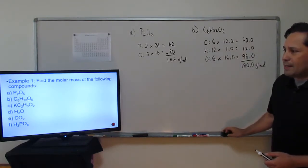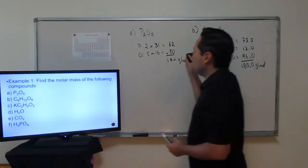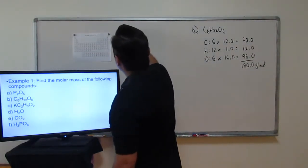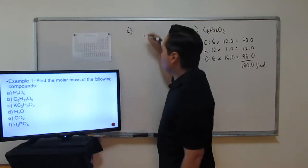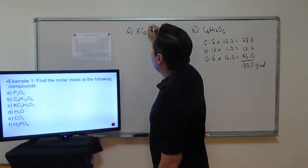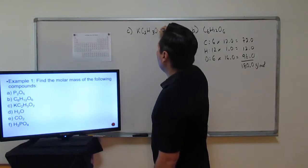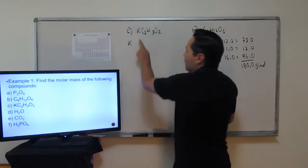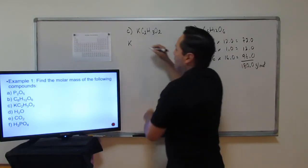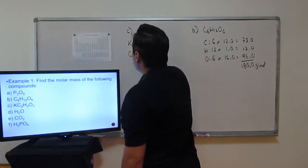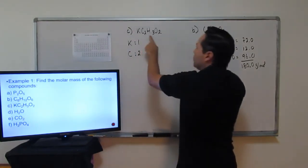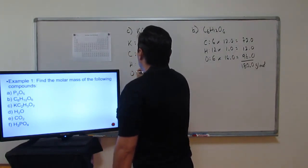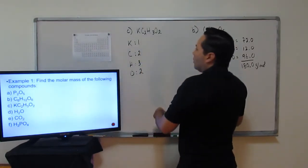Let's move on to letter C: potassium acetate, KC₂H₃O₂. Again, we count how many of each atom we have. If there's no number, that means one. There's one potassium, two carbons, three hydrogens, and two oxygens.